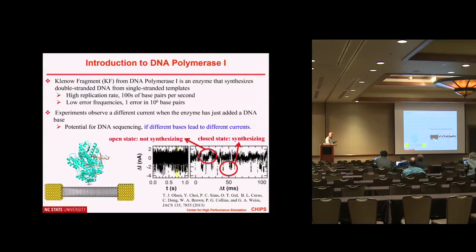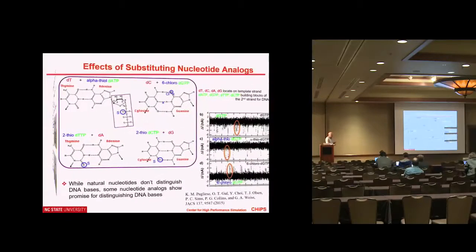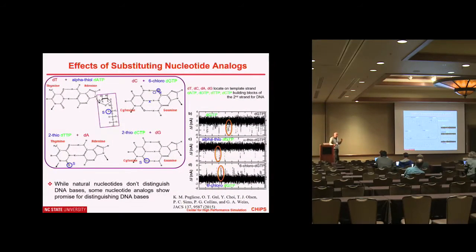If the current were different for each added base, one could achieve electrical DNA sequencing — no optical labels, very fast and precise. We are not there yet. We run molecular dynamics simulations for a nanotube with a full enzyme attached — a 100,000-atom NAMD simulation — equilibrate, grab geometries, optimize in DFT, then do quantum calculations for 5,000 atoms to calculate the current. We get a detectable change between the open and closed states, reproducing the experiment.